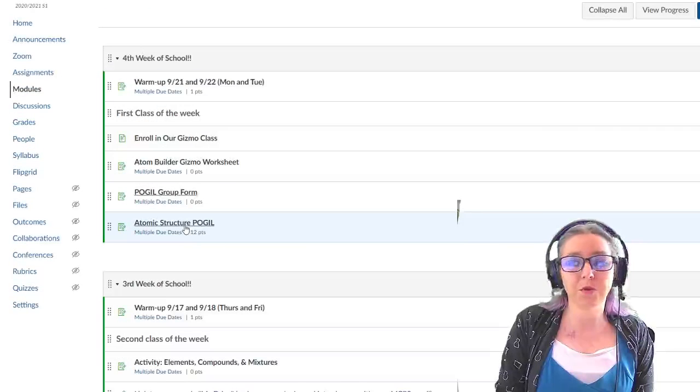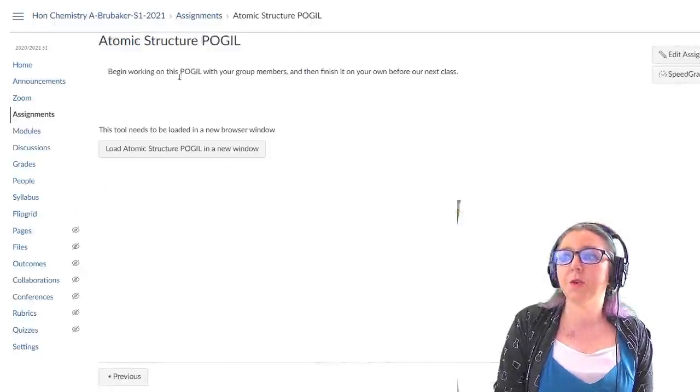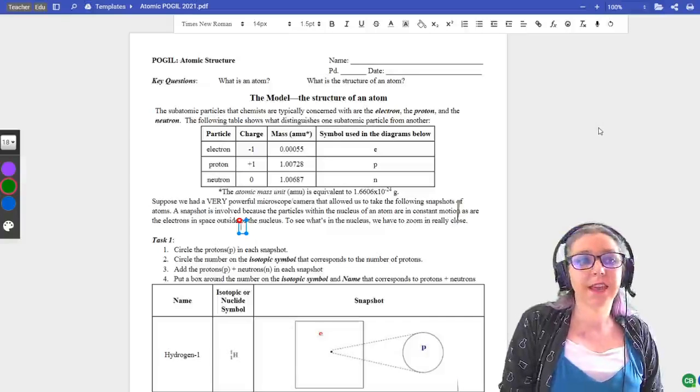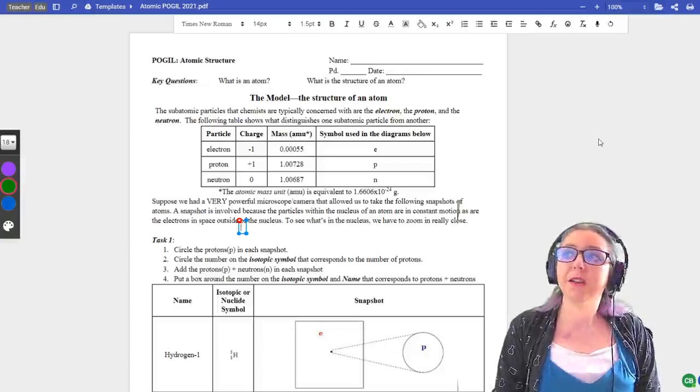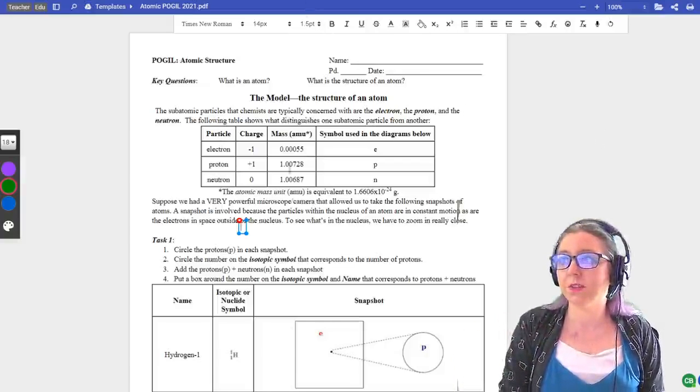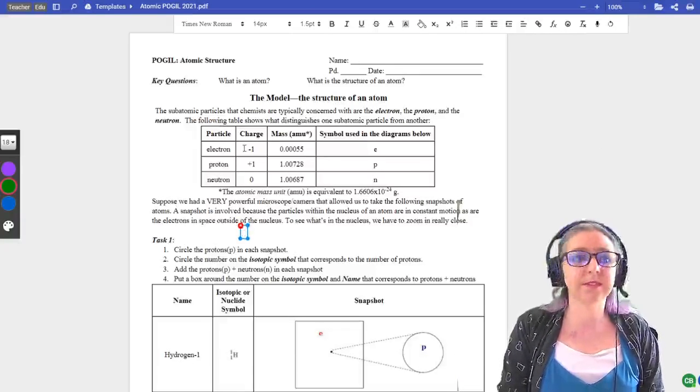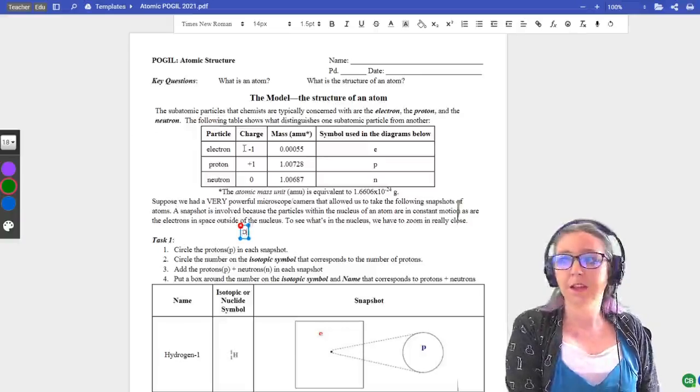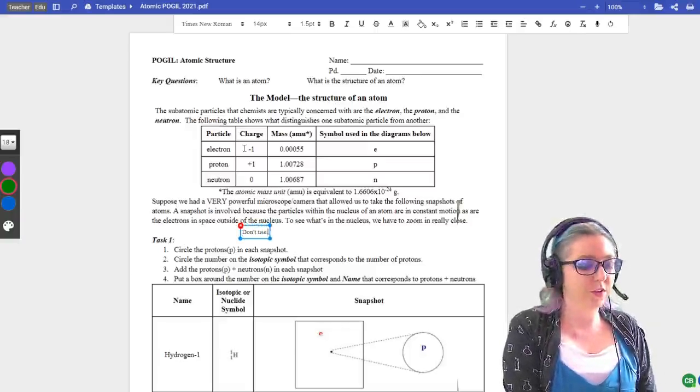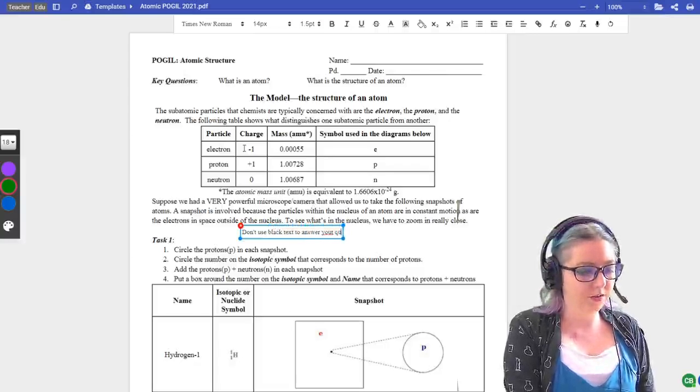Your atomic structure POGIL is the assignment you are all working on. This is a CAMI assignment. Everyone needs to make sure they hand in their own document. And one thing I really want to stress, please, please, please don't use black text to answer your questions.